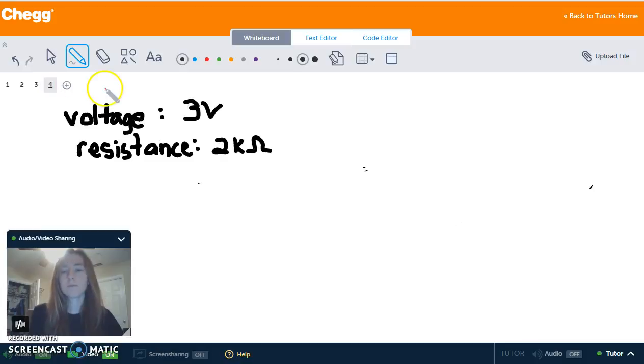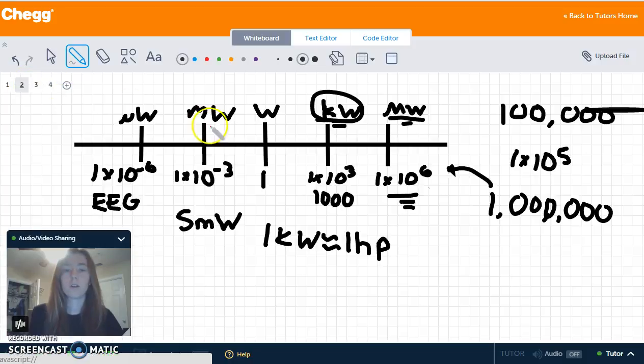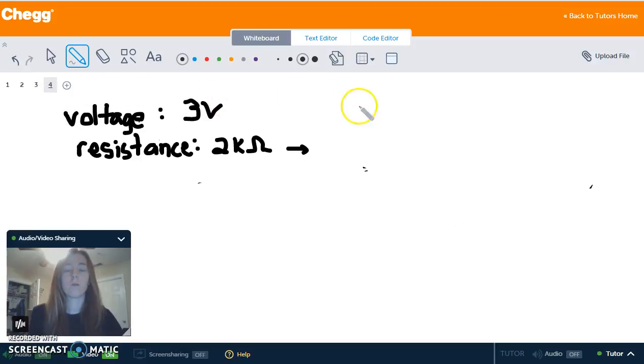So let's look at a problem. Let's say you have a voltage of three volts and you have a resistance of two kiloohms. So back to this chart, kiloohms is one times 10 to the 3. So there are one times 10 to the 3 watts, well, watts in a kiloohm, in a kilowatt. Kilowatt is a lot of energy, takes a lot of watts to get there. So two kiloohms is two times 10 to the 3 watts.